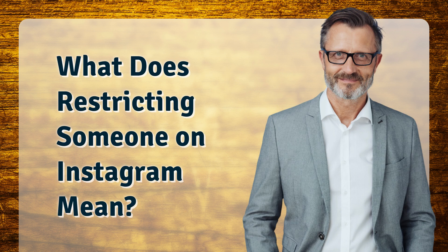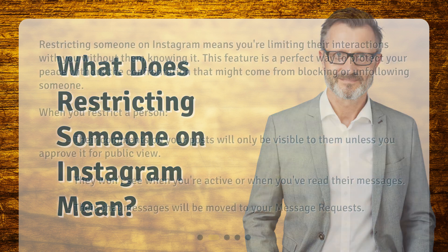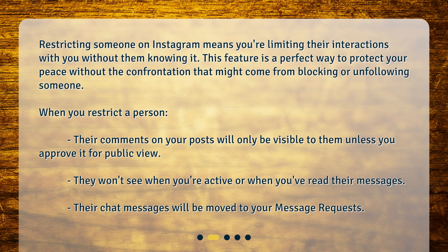What does restricting someone on Instagram mean? Restricting someone on Instagram means you're limiting their interactions with you without them knowing it. This feature is a perfect way to protect your peace without the confrontation that might come from blocking or unfollowing someone. When you restrict a person, their comments on your posts will only be visible to them unless you approve it for public view. They won't see when you're active or when you've read their messages. Their chat messages will be moved to your message requests.